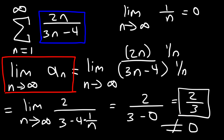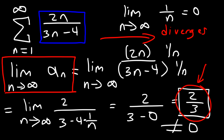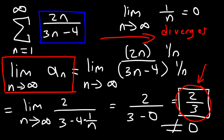The fact that it doesn't equal 0 — it equals a finite value — tells us that the series diverges. Because if the sequence is approaching 2 over 3 when n is very large, when you try to calculate the sum for an infinite number of terms, you're going to keep adding 2 over 3 as n approaches infinity. The sum will keep getting higher and will never converge to a finite value. Therefore, the series diverges.